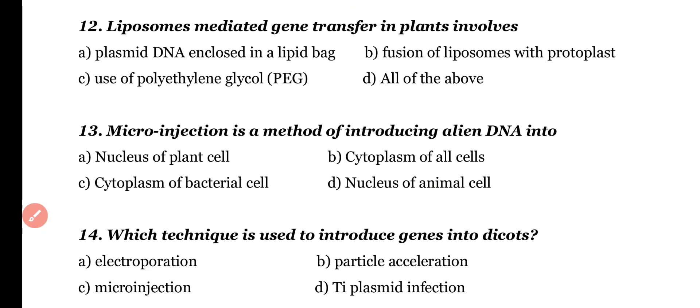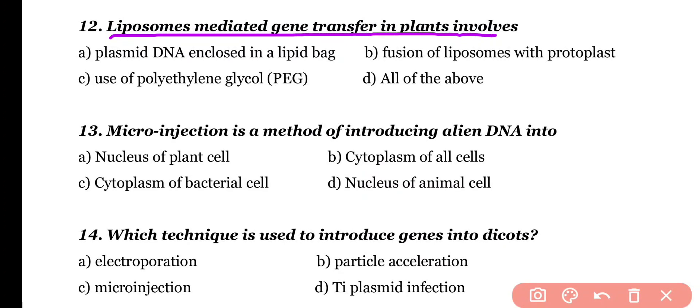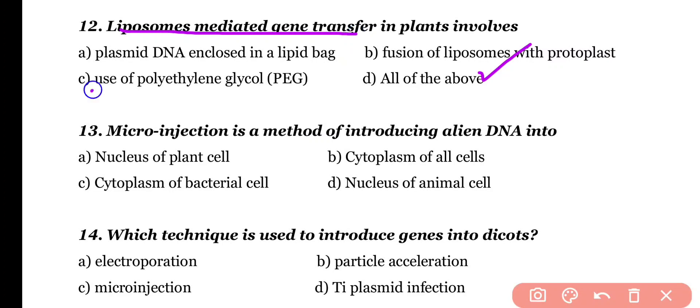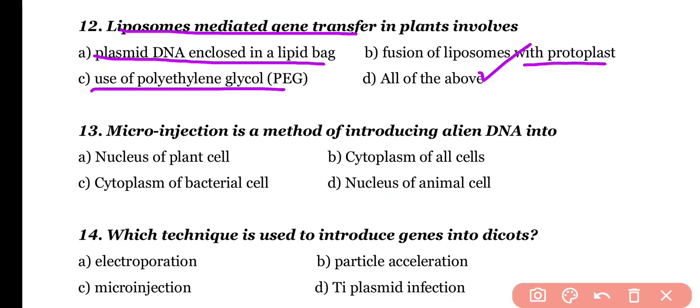Question 12. Liposome-mediated gene transfer in plants involves: plasmid DNA enclosed in a lipid bag, fusion of liposomes with protoplasts, use of polyethylene glycol, or all of the above. Correct answer is option D. Liposome-mediated gene transfer in plants involves all of the above, including use of polyethylene glycol.